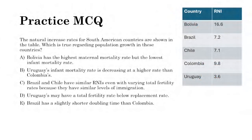An MCQ presents natural increase rates for South American countries: Bolivia has the highest RNI and Uruguay the lowest. Bolivia has the highest population growth, Uruguay the lowest. Brazil and Chile have very similar RNIs, so they have similar levels of population growth. We go through each answer choice to determine which is a true statement.